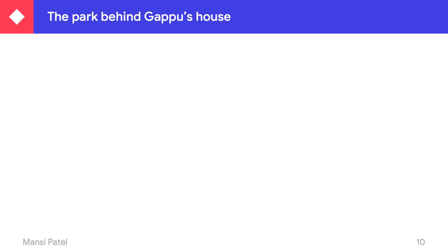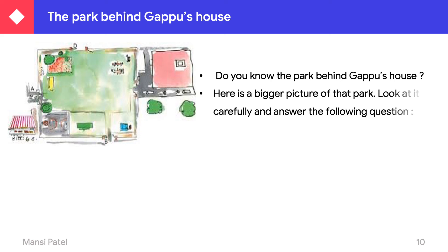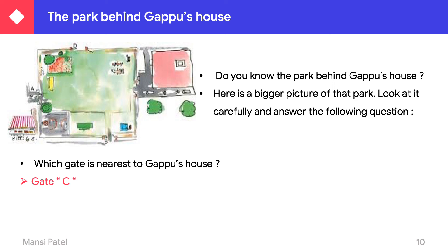As you already know, there was one park behind Gappu's house. Here is a big picture of that park. Look at it carefully and answer the following questions. First question: which gate is nearest to Gappu's house? You can see the pink one is Gappu's house. So which gate is nearer to his house? We can say gate C is nearest to Gappu's house.